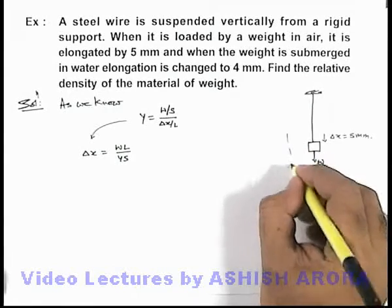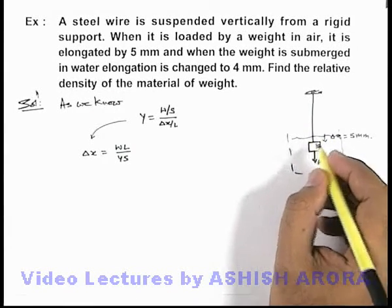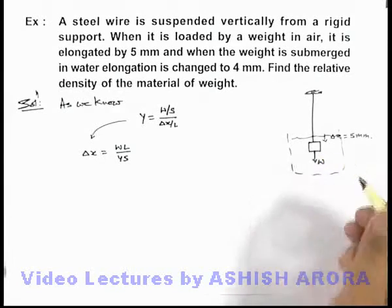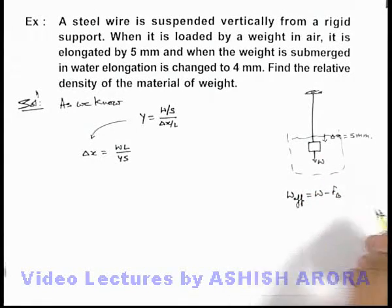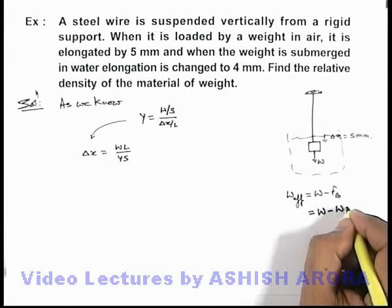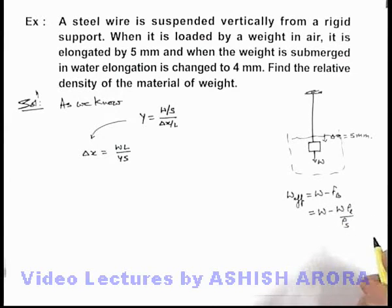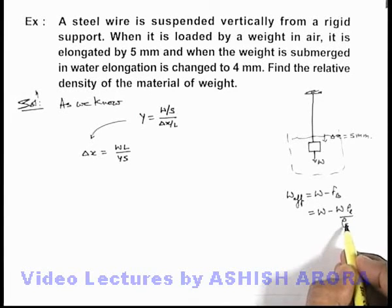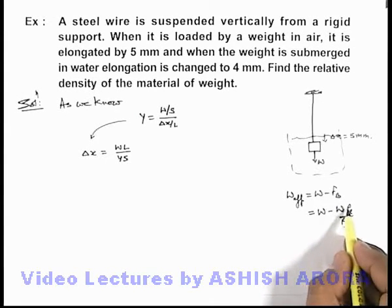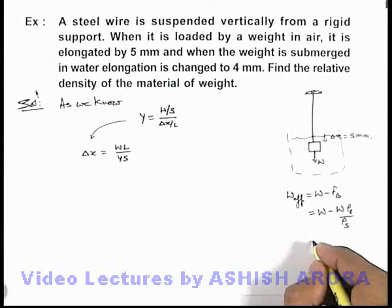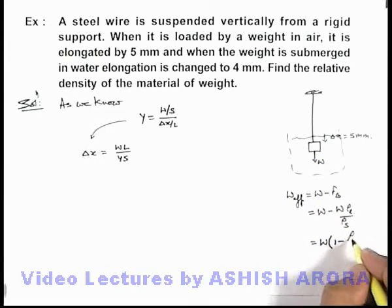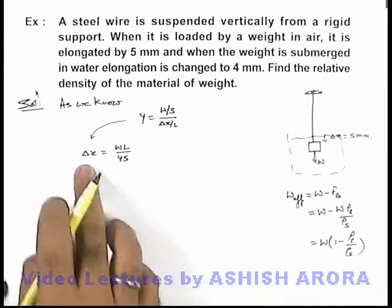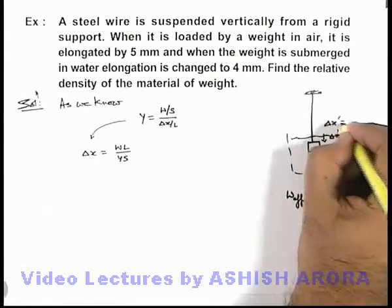When the weight is submerged in water — say a water tank is brought beneath the weight — the effective weight acting on the body will be the weight minus the buoyancy force. The buoyancy force equals W times the density of the liquid divided by the density of the solid. So the effective weight producing elongation in the wire after submerging is W times (1 minus rho_liquid divided by rho_solid). Using this, the second elongation delta x dash is given as 4 mm.